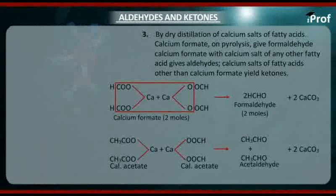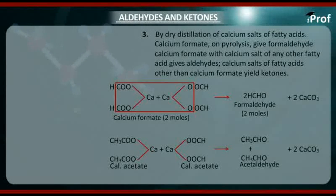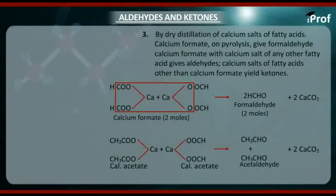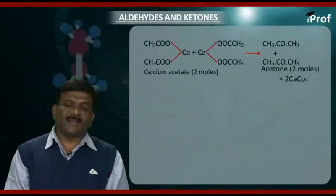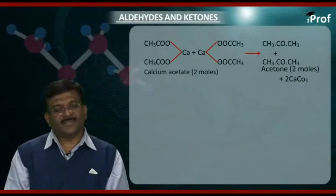The reaction: 2 moles of calcium formate gives formaldehyde and calcium carbonate. The combination of calcium acetate plus calcium formate gives aldehyde and calcium carbonate. While 2 moles of calcium acetate gives acetone.